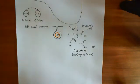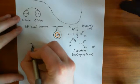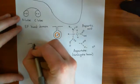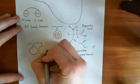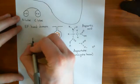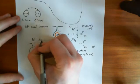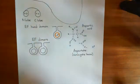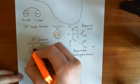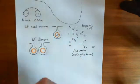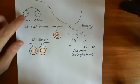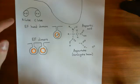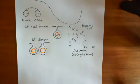EF-hand domains rarely come as a single domain on their own. Instead, you usually get an EF-hand domain with a linker region and then another EF-hand domain sitting next to it — what are known as EF dimers. The EF dimer overall is capable of binding two calciums. This is the structure found in calmodulin: two EF-hand domains sitting next to each other in each of the two lobes, giving four calcium binding sites across the whole calmodulin structure.